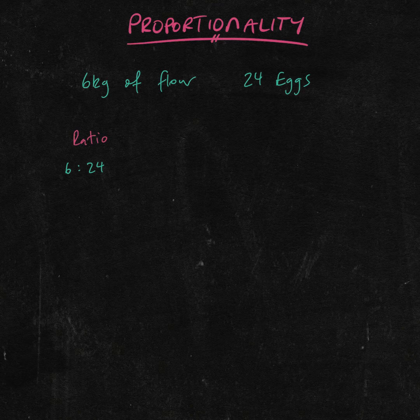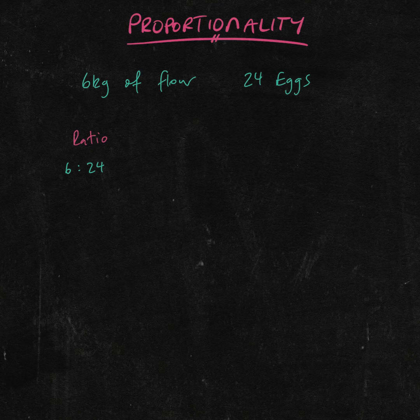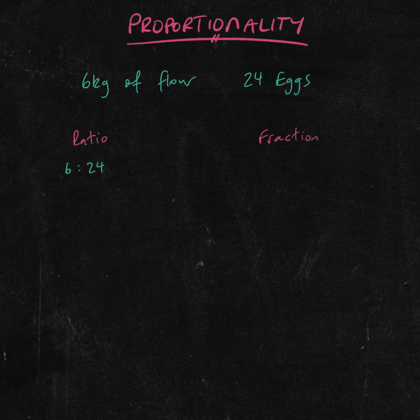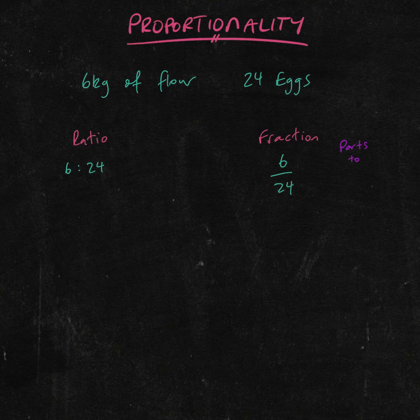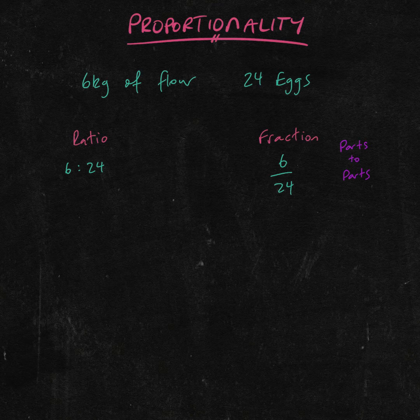So this is the same as saying 6 kilos of flour to 24 eggs. Another way to write out a ratio is using fraction notation. So we can write 6 over 24. And this is what we call a parts to parts ratio, because we are looking at the relationship between the flour and the eggs, as opposed to all of the ingredients.